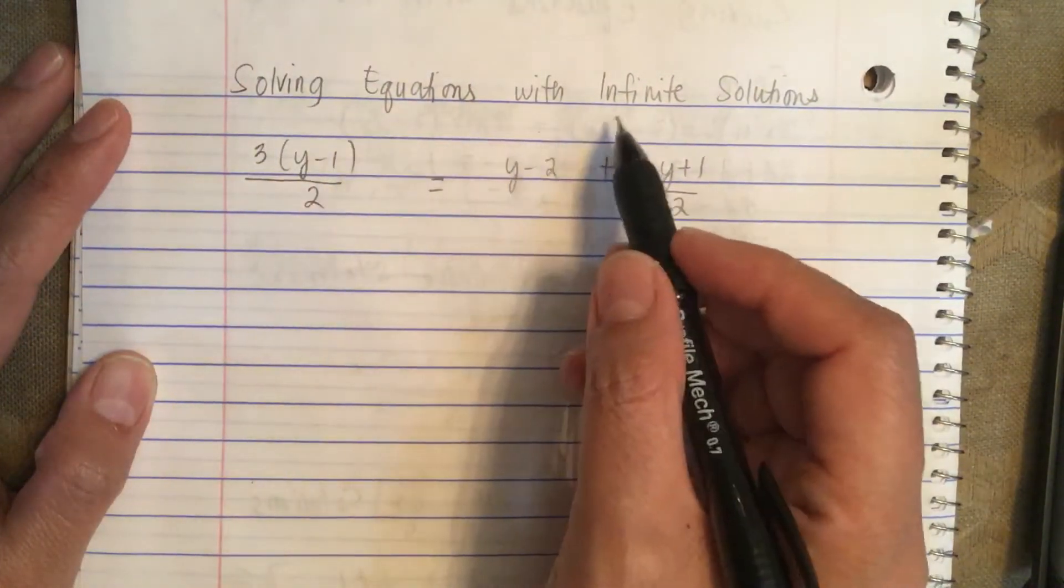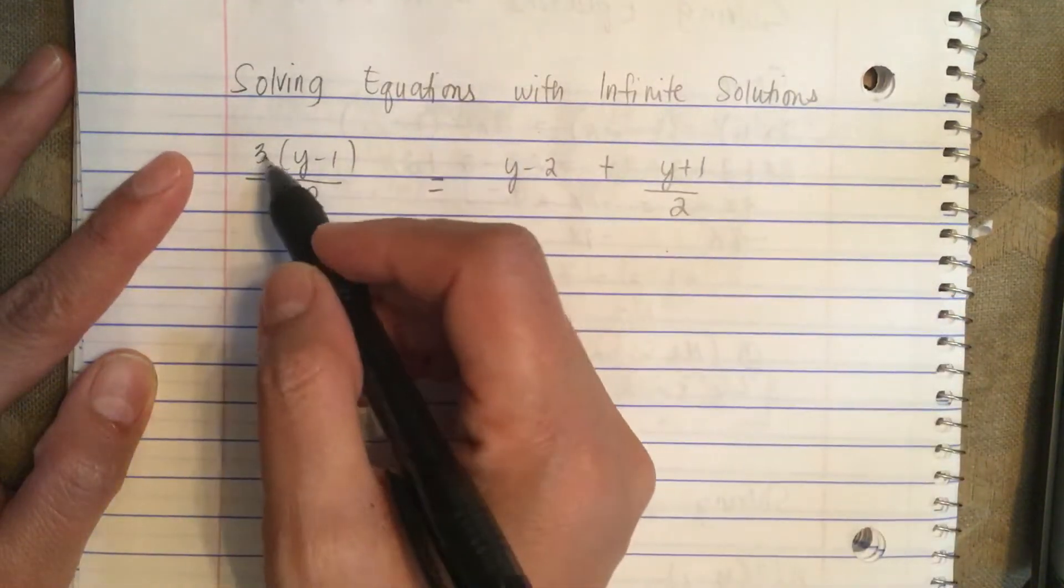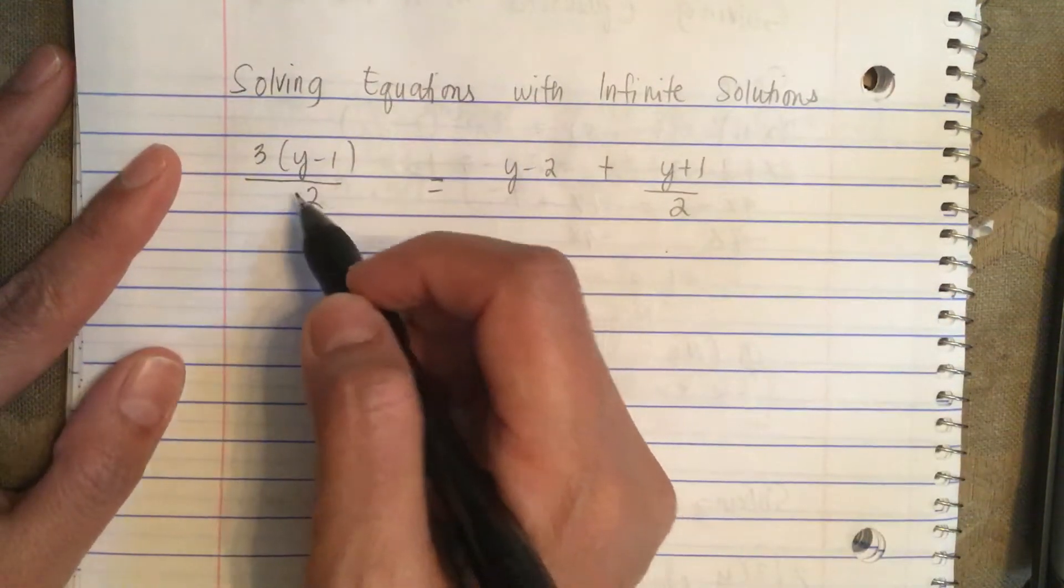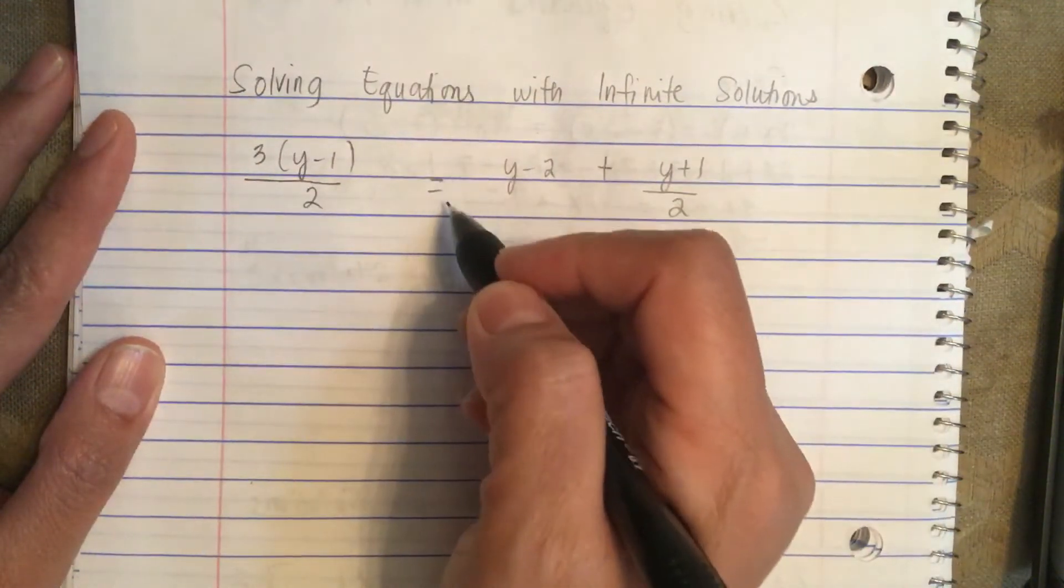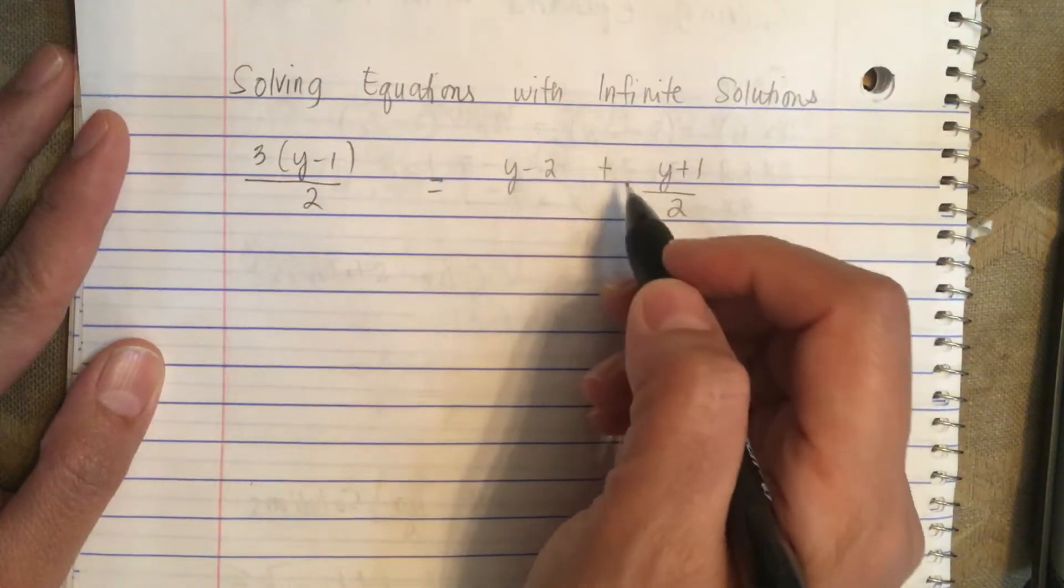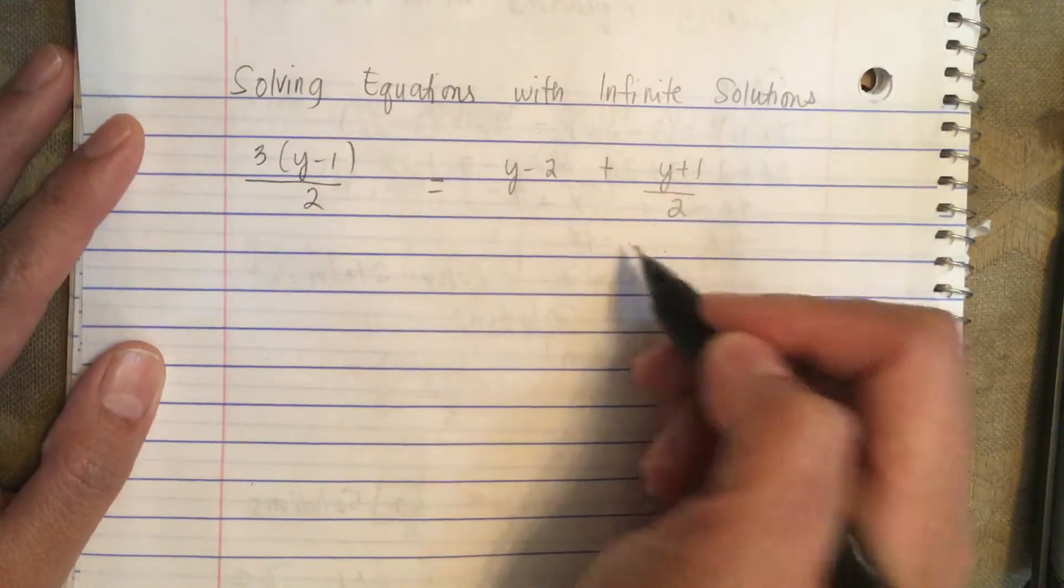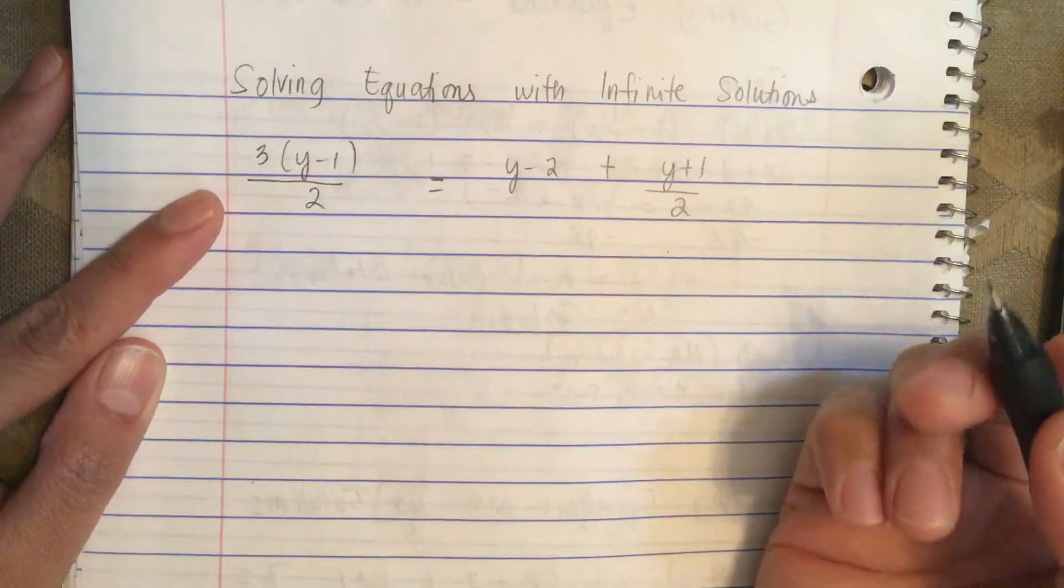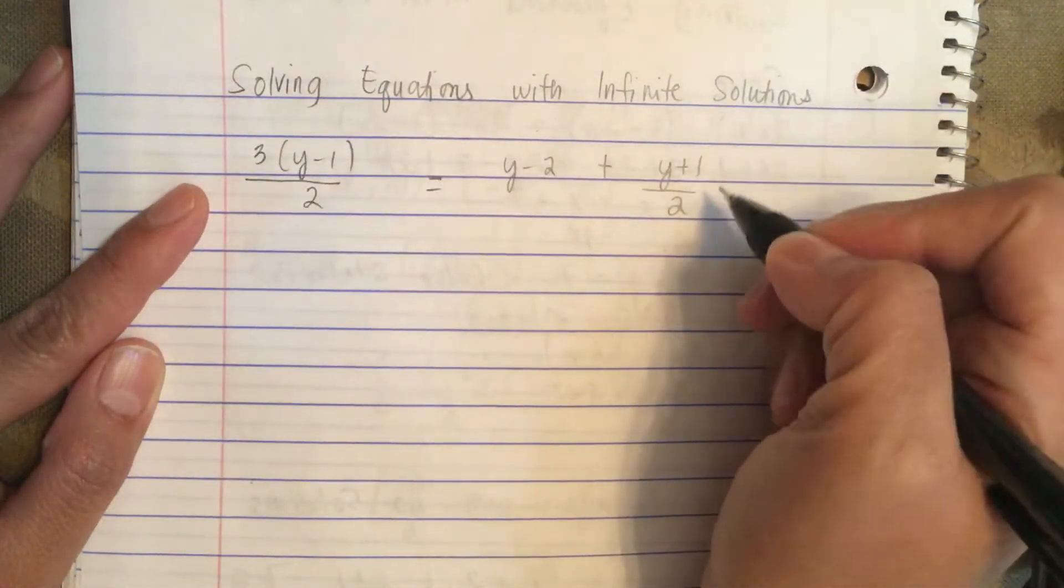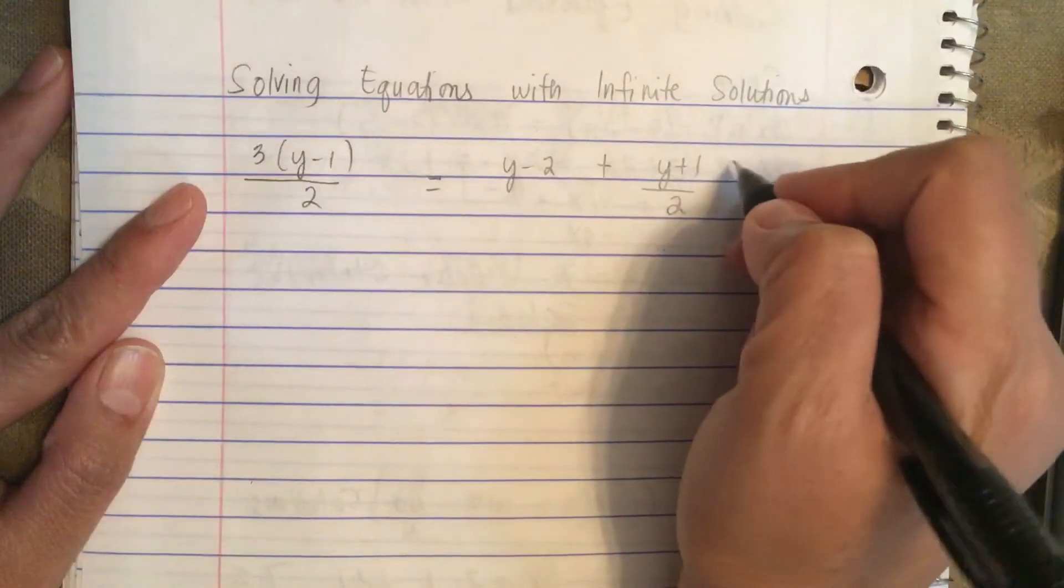Solving equations with infinite solutions. We have 3(y-1)/2 equals y-2 plus (y+1)/2. Now the first thing we do is get rid of the denominator.